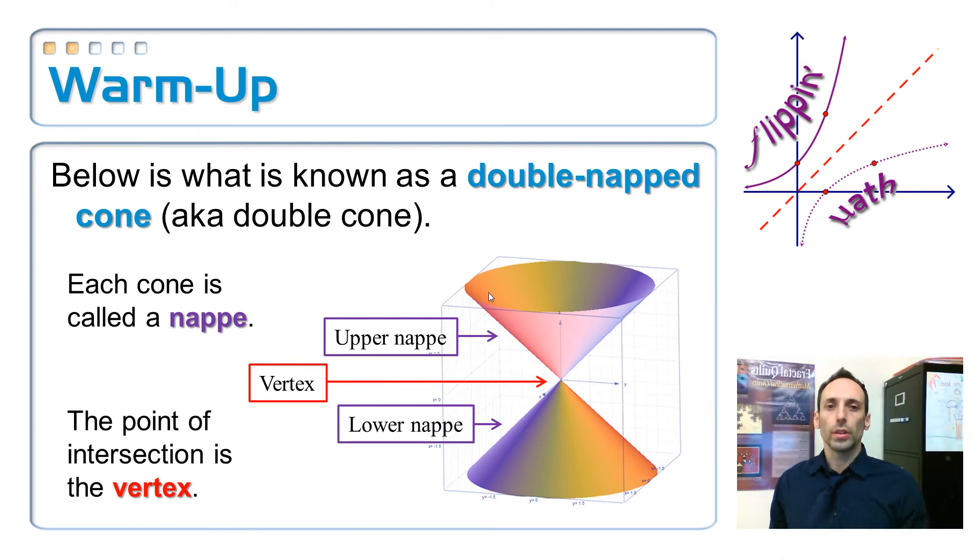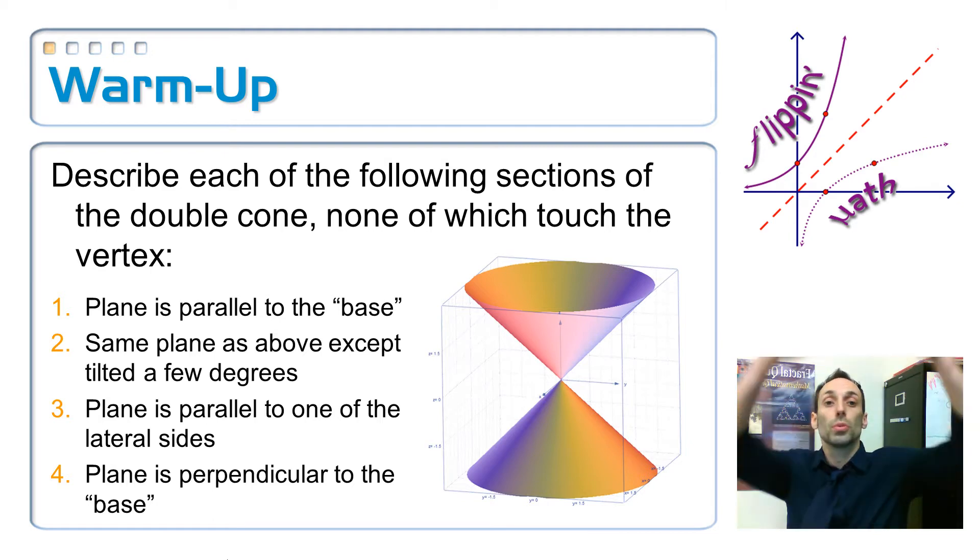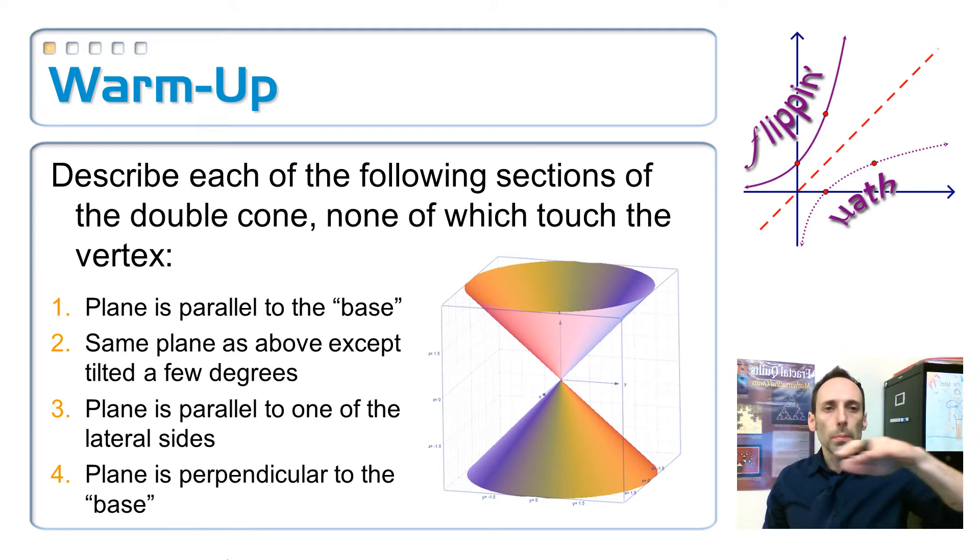All right, now let's take that double nap cone, and let's slice it up. Okay, so the first way we're going to slice this is take a plane, and we're going to make it parallel to the base. Base, well, we're talking about like one of those circular things, because these things are supposed to go on forever. So it goes up forever, goes down forever, but just think of it being parallel to one of those circular bases, and what shape is it going to make? I'm not going to tell you. You just think about that for a second.